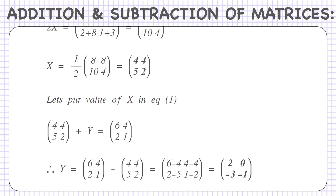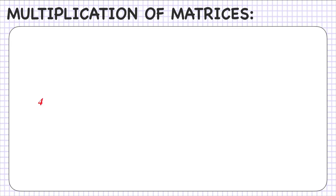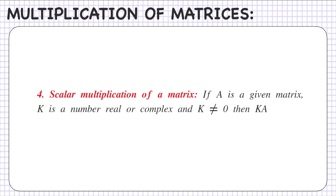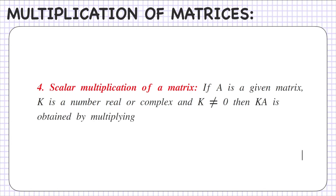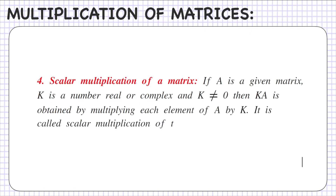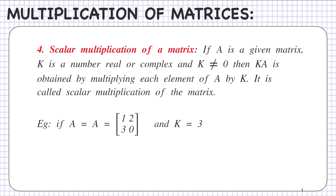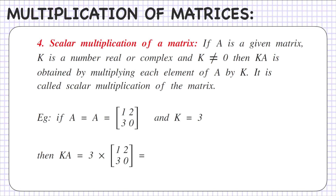Next is scalar multiplication of a matrix. If A is a given matrix and k is a real or complex number with k not equal to 0, then kA is obtained by multiplying each element of A by k — this is called scalar multiplication. For example, if A equals [1, 2, 3, 0] and k equals 3, then kA equals 3×[1, 2, 3, 0] giving [3, 6, 9, 0].